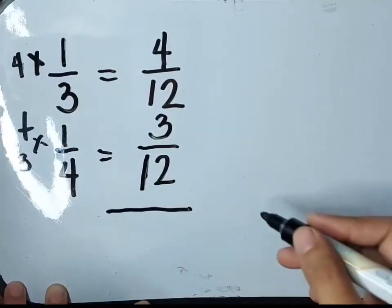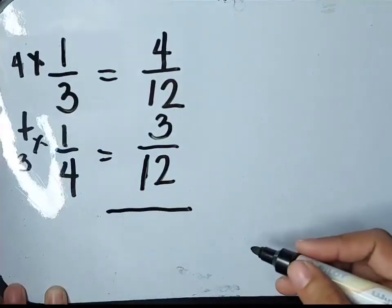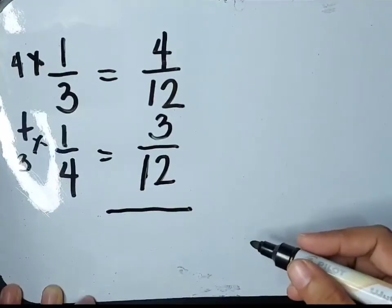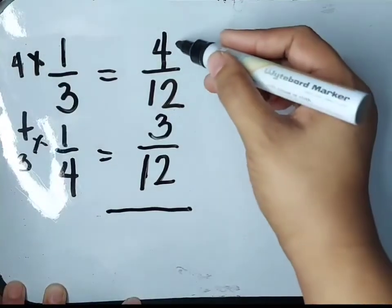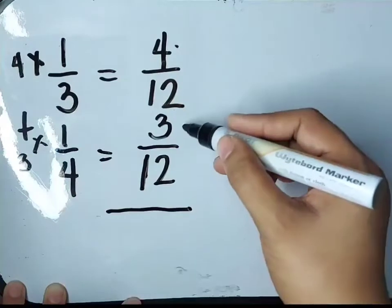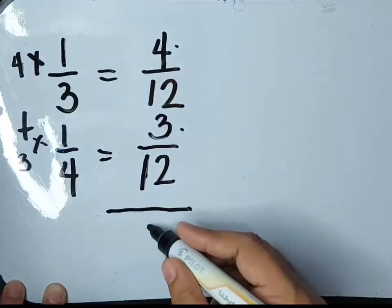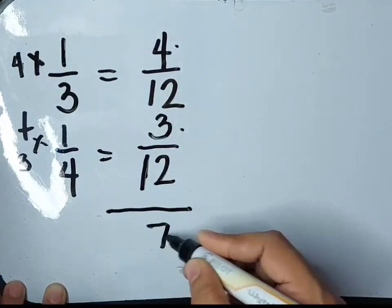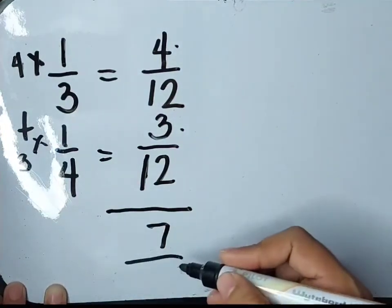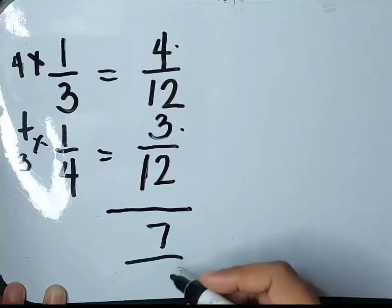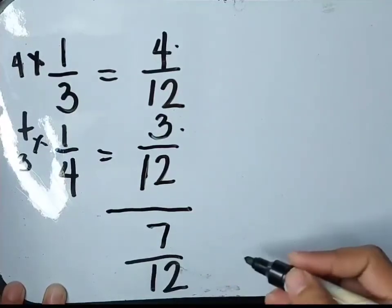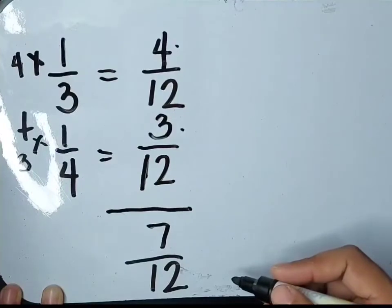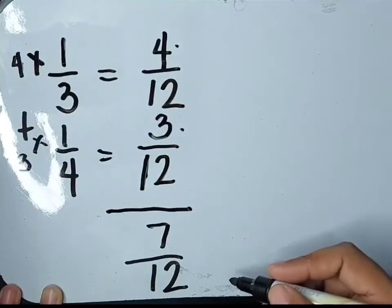Let's add these new fractions as similar fractions since we now have the same denominator. 4 plus 3 is equals to 7. Let's copy the common denominator, which is 12. Our answer is 7 over 12. This is already in simplified form.